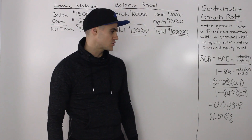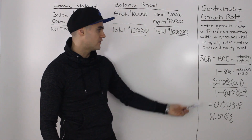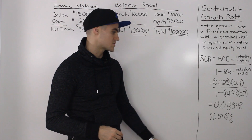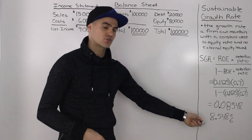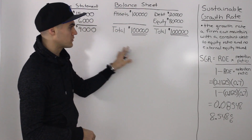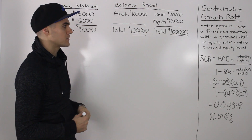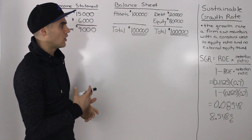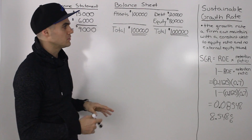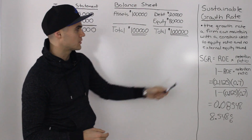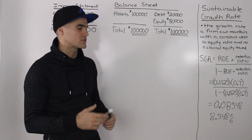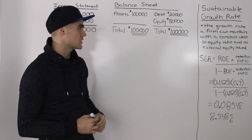Now let's actually show how this sustainable growth rate will work with financial statements. Let's take this company, grow it by this rate, create some pro forma financial statements, and see what happens. We'll also get into a little bit more detail talking about what this constant debt-to-equity ratio means, which will be better explained through the example.